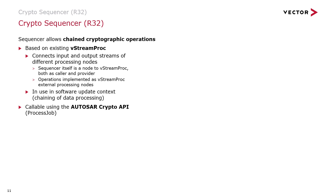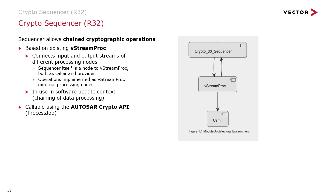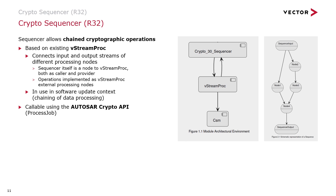Maybe you already have used our vStreamProc component in context of over-the-air update. The new crypto sequencer functionality is based on the very same component. In over-the-air update, it allows chaining of data processing — and here, it does a very similar job and allows you to chain cryptographic operations. Check the first sequence, where you can see this chaining mechanism. Input and output streams of processing nodes are connected via the vStreamProc module. Through combination, chain sequences can be parallel threads of nodes in which you can run cryptographic operations, and then you join the result of those parallel threads via a corresponding configuration.